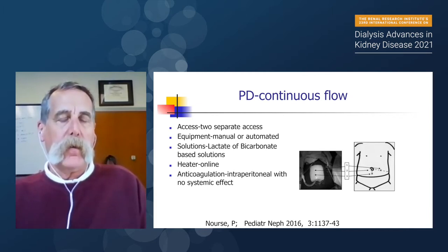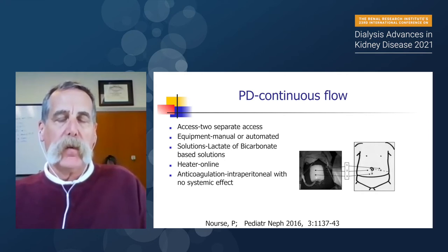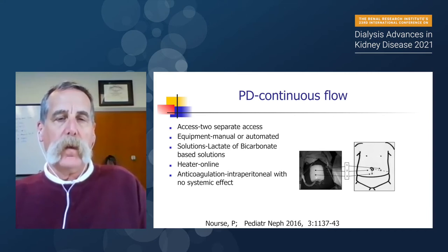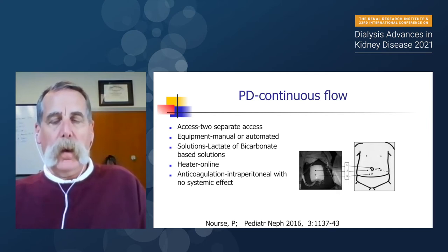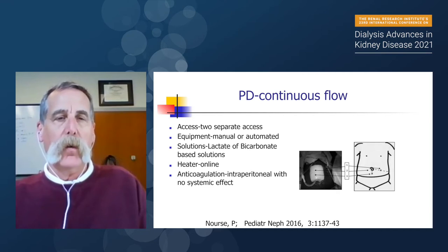CFPD, or continuous flow peritoneal dialysis, is something you need to know about. Peter Norris at Cape Town in South Africa has done great work on it. It requires two accesses — an inflow and an outflow. Solution goes in, solution comes out. You do not get diaphragmatic excursion or changes in hemodynamics, and a recent paper shows you get much better clearance on CFPD than on standard PD. Many programs are working with Toronto as well as Cape Town to look at this approach for use in the acute setting.